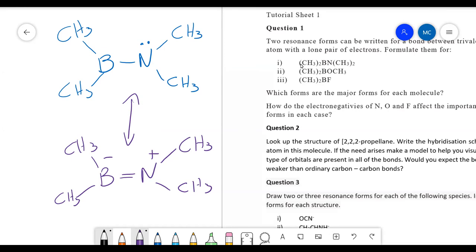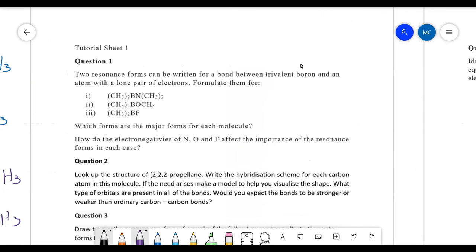With the boron and fluorine one though, you will have this one. And fluorine will not enjoy being positive charge. So even though you have the full octet of electrons, this would be a secondary and minor product.